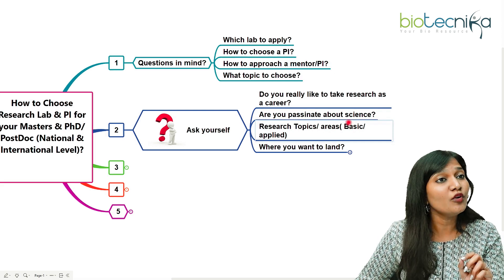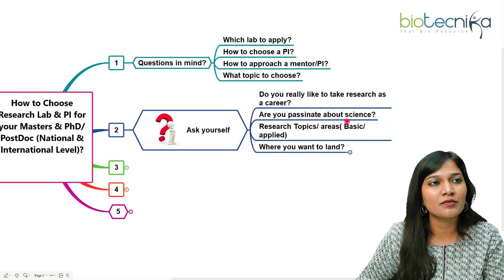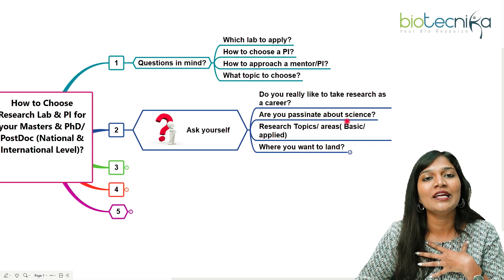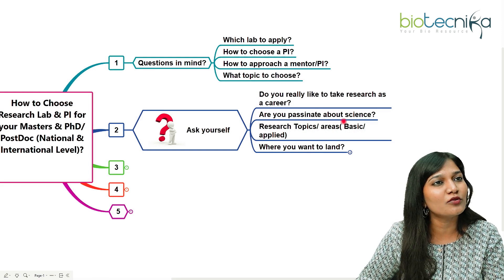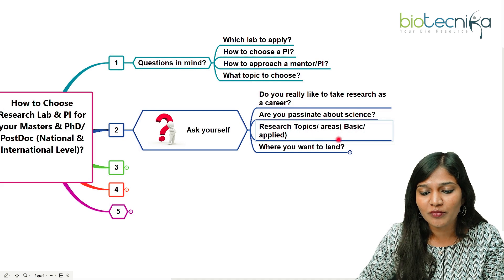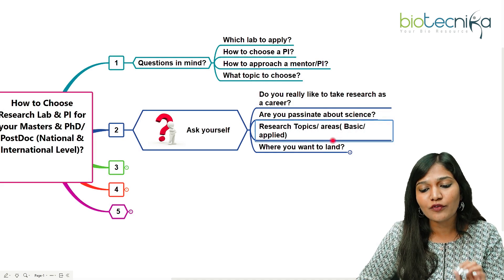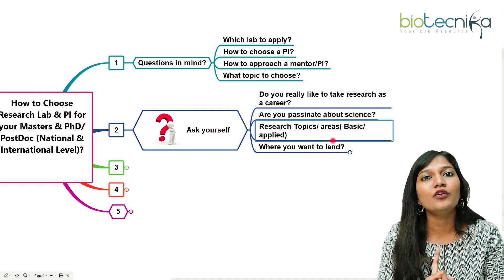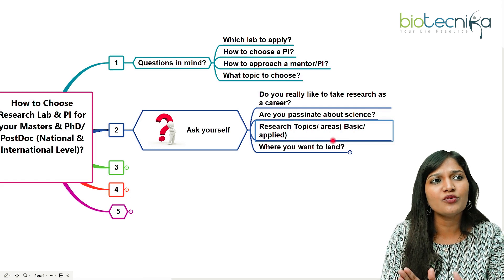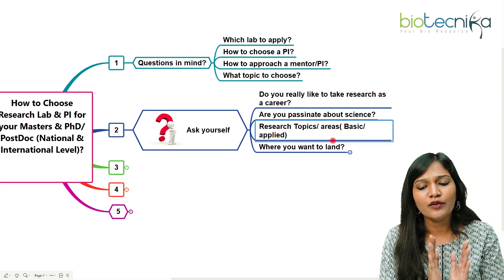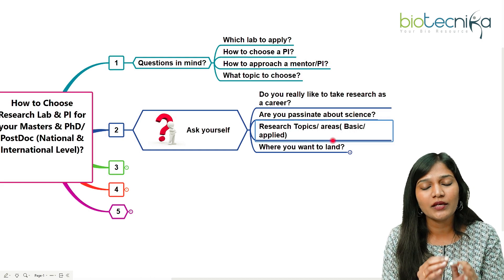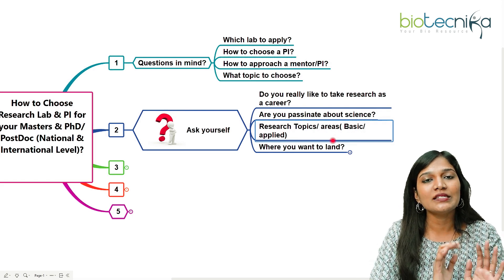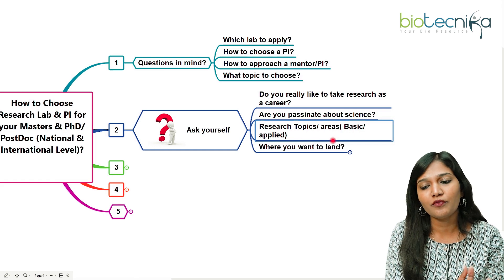The second question is: are you passionate about science? When somebody talks about something interesting in science, do you feel a kind of glow in your eyes or a sense of peace in your mind? If yes, research is definitely going to be a career for you. The third important thing is to decide what research topic to choose — do you want to go for basic research or applied, application-oriented research? Choose it wisely.